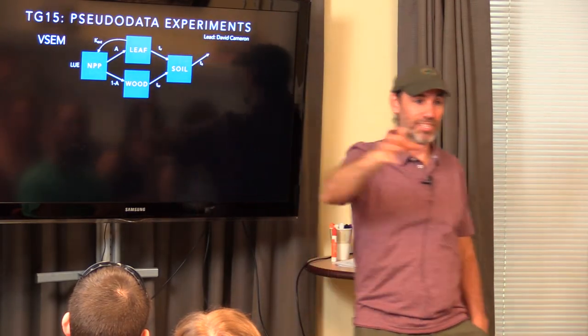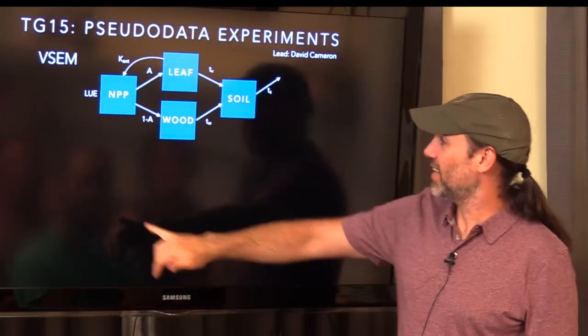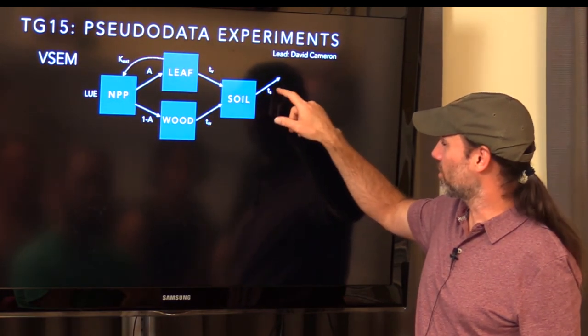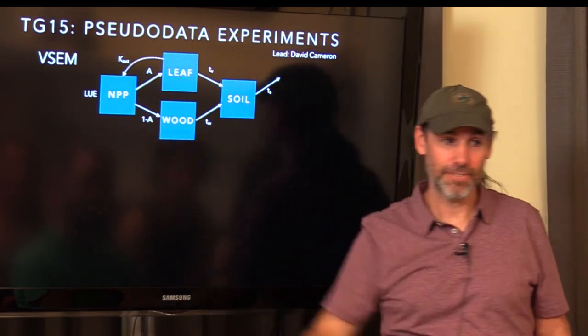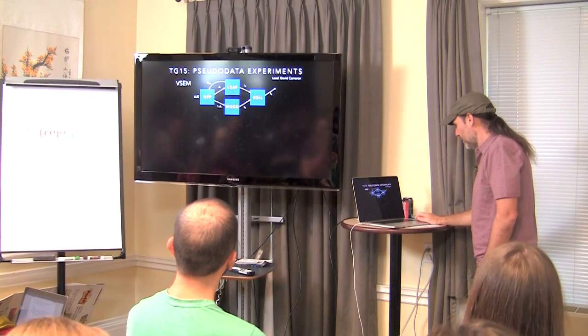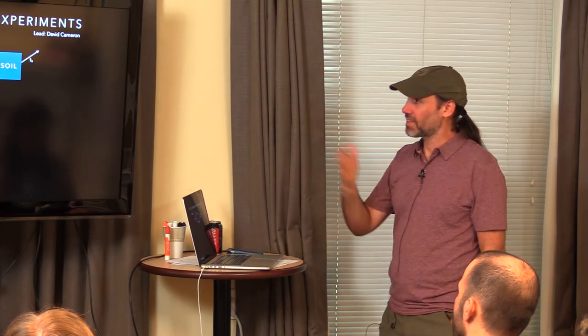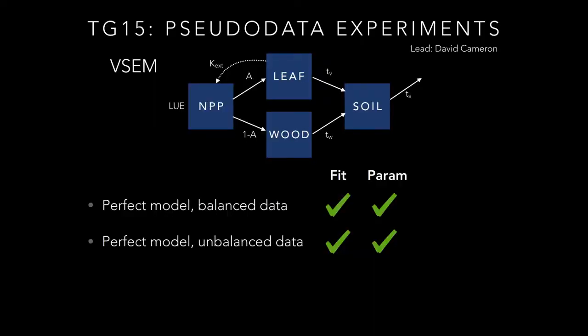David and I ran pseudodata experiments with a Very Simple Ecosystem Model (VSEM) — similar to what you played with in the particle filter. It has an NPP process allocating carbon to leaf and wood, turnover to soil, soil turnover, with leaf amount affecting NPP. We simulated data from it with different types of systematic and random errors in the data and model, and explored trade-offs with balanced and unbalanced data. With a perfect model and balanced data — same number of observations for net carbon flux, soil carbon, and above-ground carbon — you get a good fit and recover the right parameters.